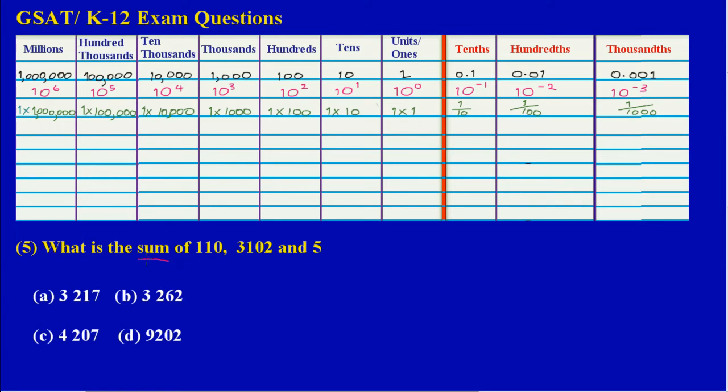The word sum means to add, so they're asking what is the result when 110 plus 3102 and 5 is added.